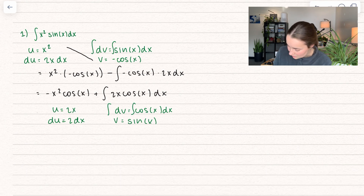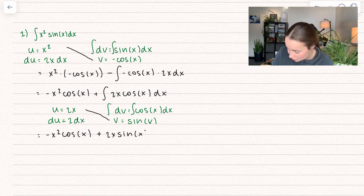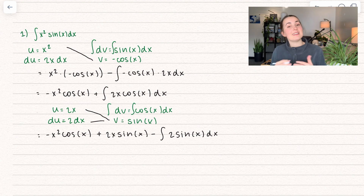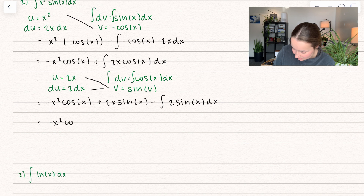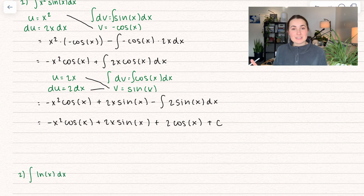So we have negative x² cosine of x — that did not change at all. Now applying the formula again — uv raised: 2x times sine of x — shooting at voodoo: that becomes the integral of 2 sine of x dx. That is something we can integrate nicely. So we get negative x² cosine of x — those did not change. Integrating 2 sine of x gives negative 2 cosine of x, but with the minus sign it becomes positive, plus some constant c. There's our final solution.